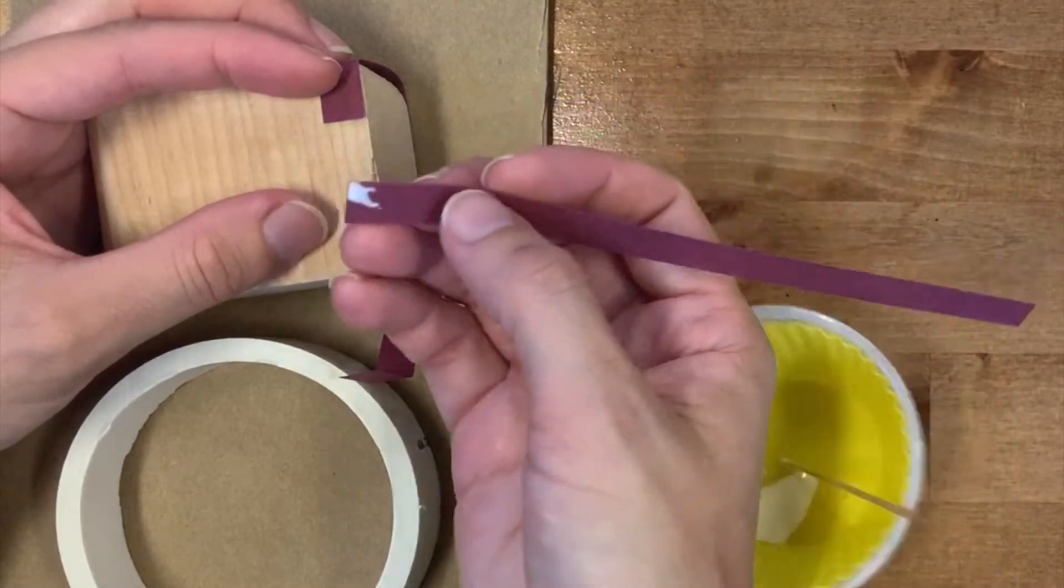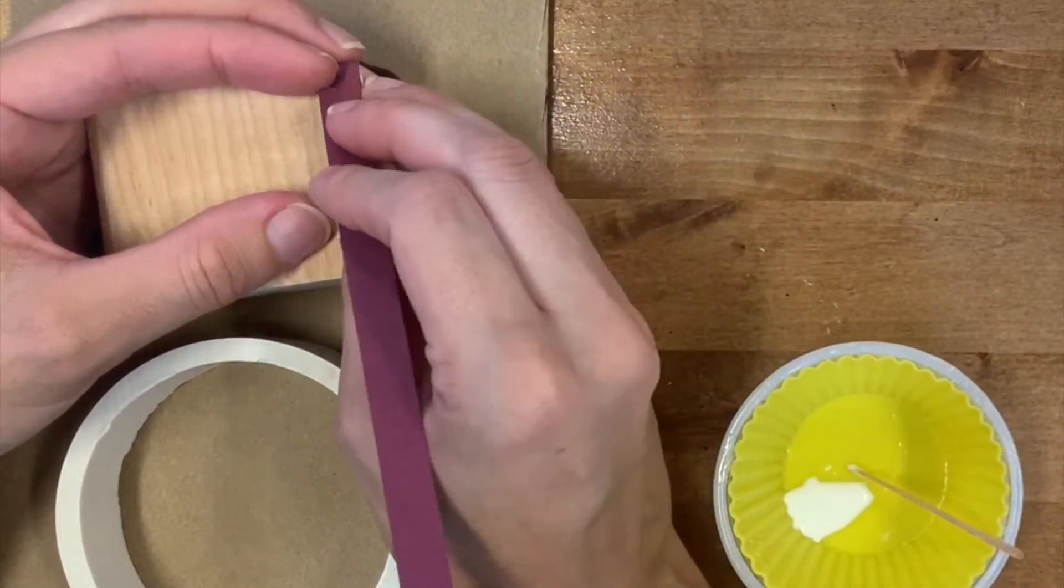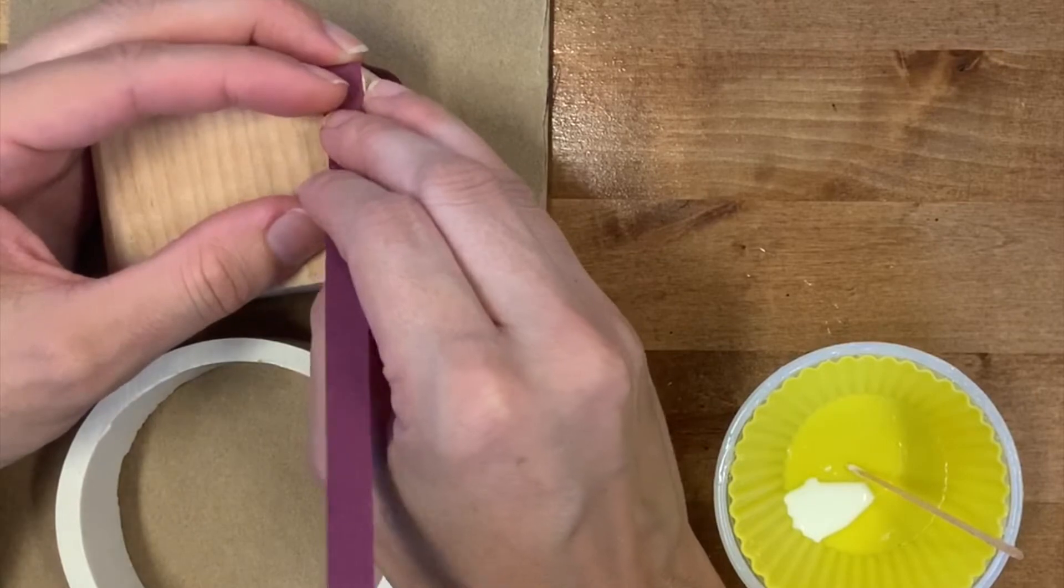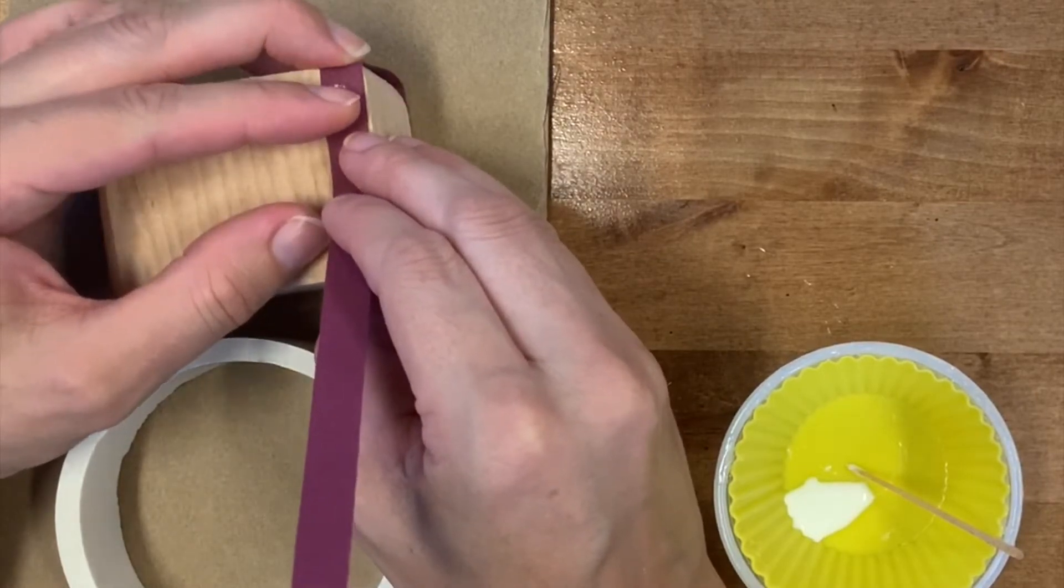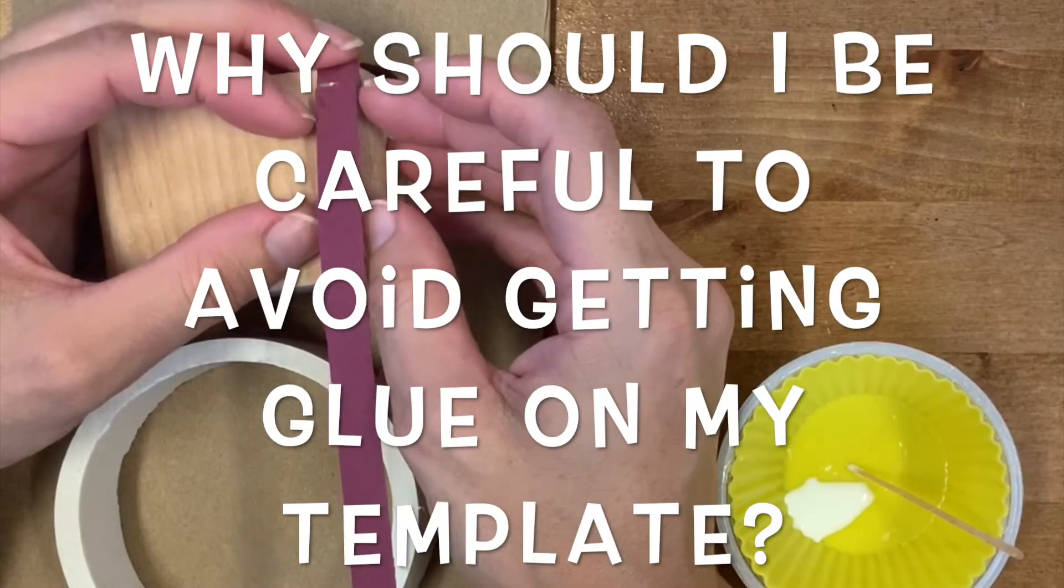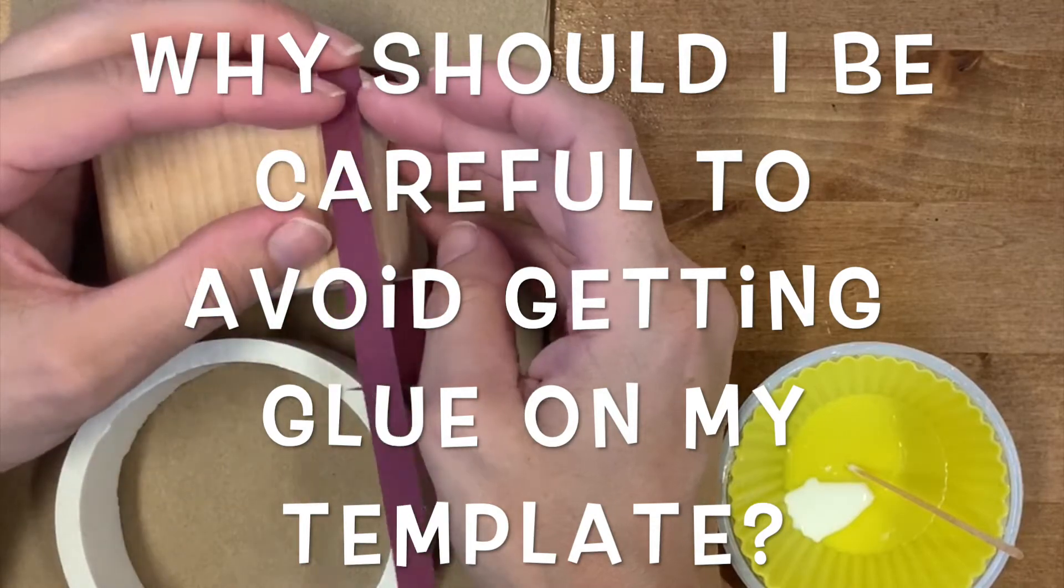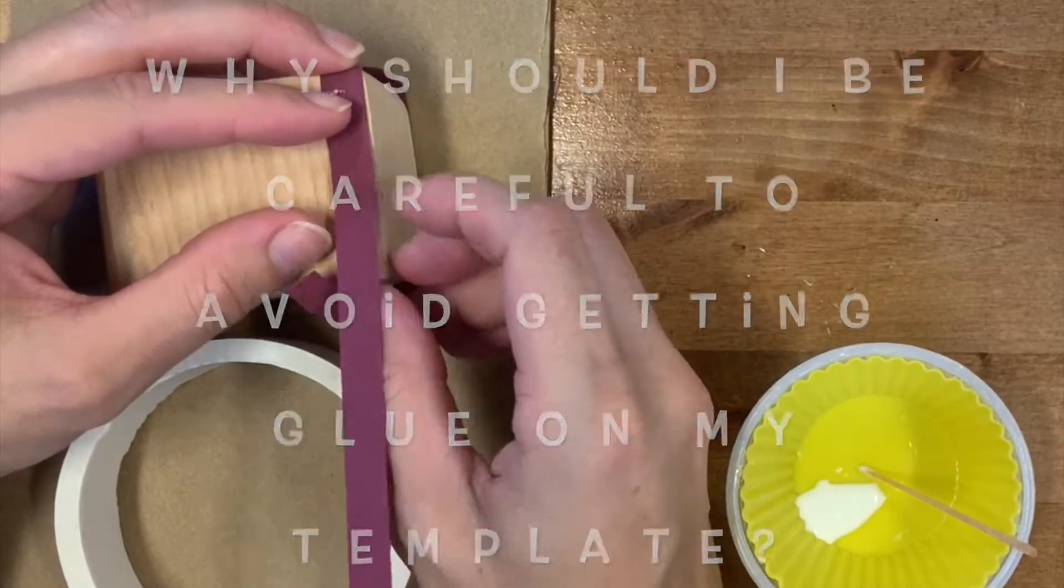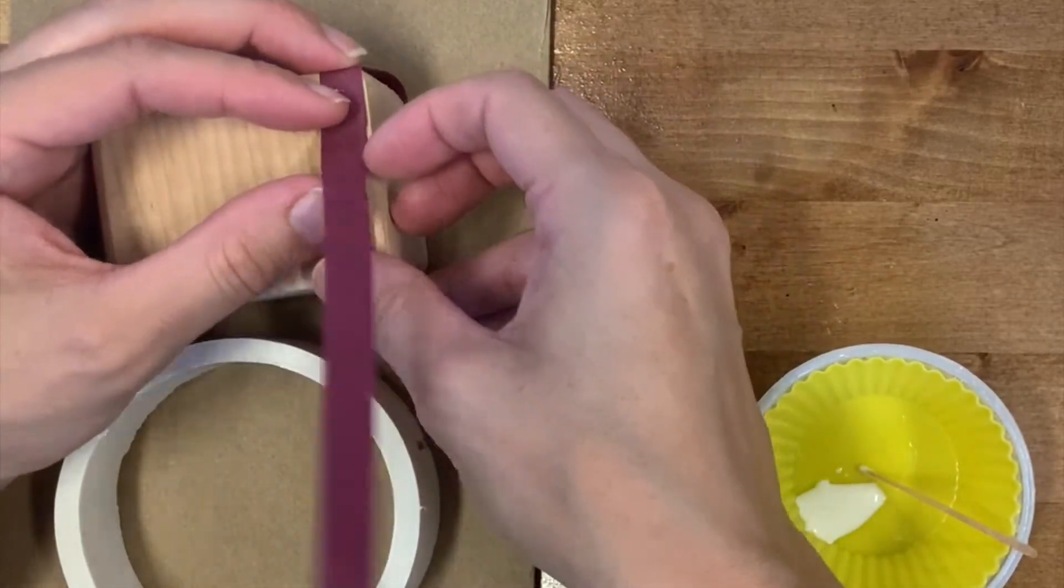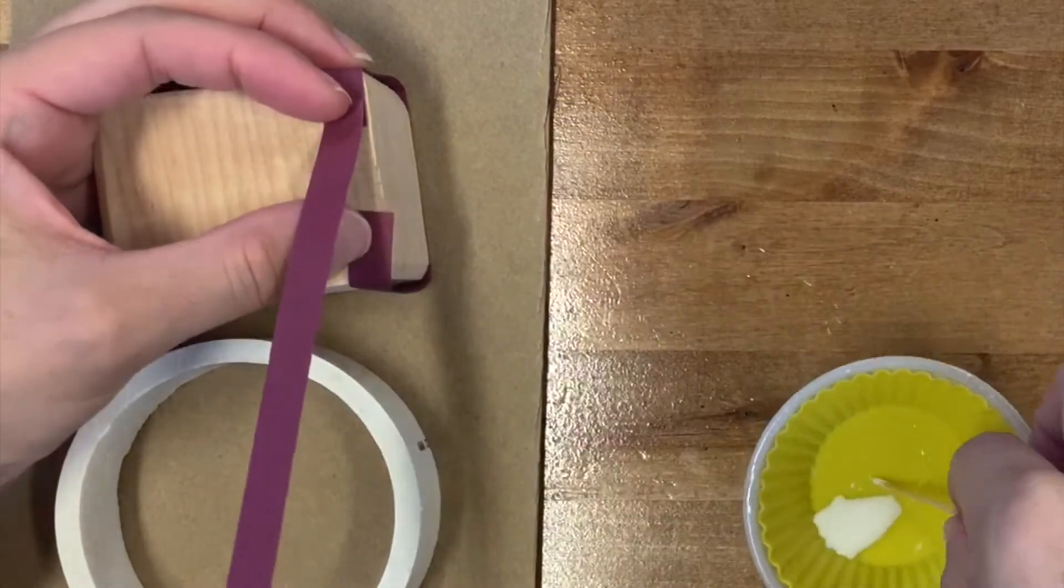Taking a little glue and putting it on the paper. I'm being very careful to make sure I don't get it on the template. If you guessed that the paper is going to stick and it's going to be impossible to get off, you're absolutely correct.